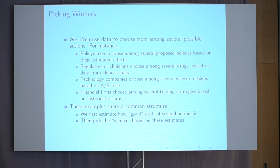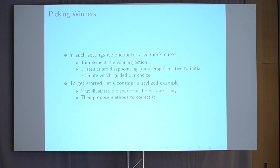All of those examples share a certain common structure: we first estimate how good each of several actions is according to some criteria, and then we pick the winner — the best action — based on those initial estimates. Something else that all of those examples share is that when we do this, we encounter a version of a winner's curse, where if we implement the winning action, we'll tend to find that the results are systematically disappointing relative to our initial estimates.